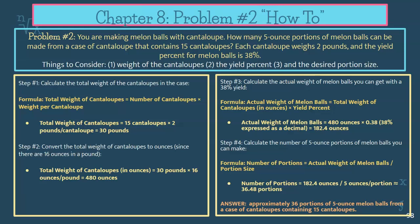In step three, you're going to calculate the actual weight of melon balls you can get with a 38% yield. Take your total from step two — 480 ounces — times the yield percent of 38%, expressed as a decimal, 0.38, and you get 182.4 ounces. That's your edible portion quantity for the melon ball salad. Then take that amount and divide it by five, because each portion is five ounces of melon balls. So 182.4 divided by five gives you 36.48 portions. Because you can't round up — you won't have enough cantaloupes — you will only get 36 portions of five ounces of melon balls from a case of 15 two-pound cantaloupes, since you can't serve a half portion.